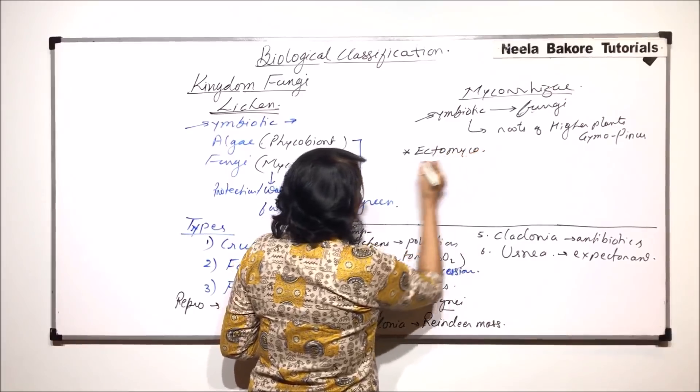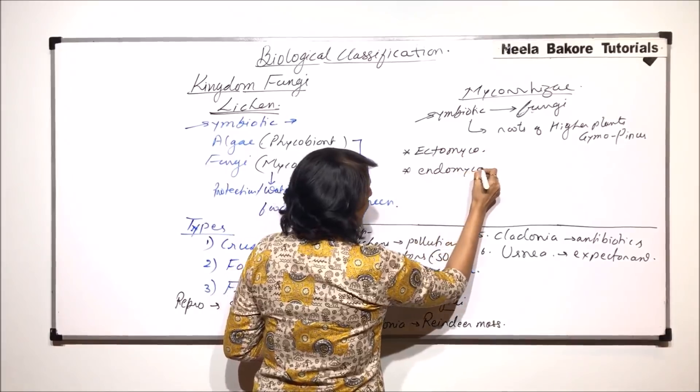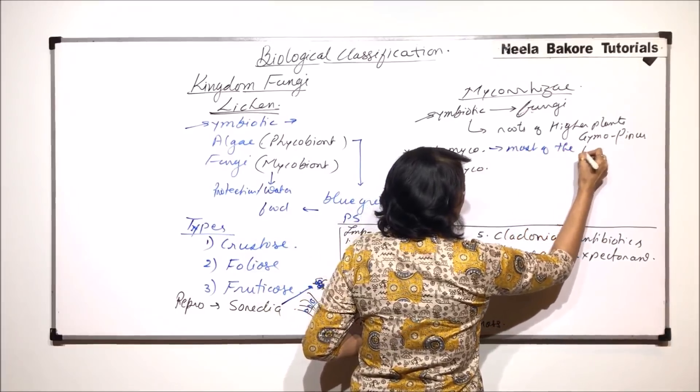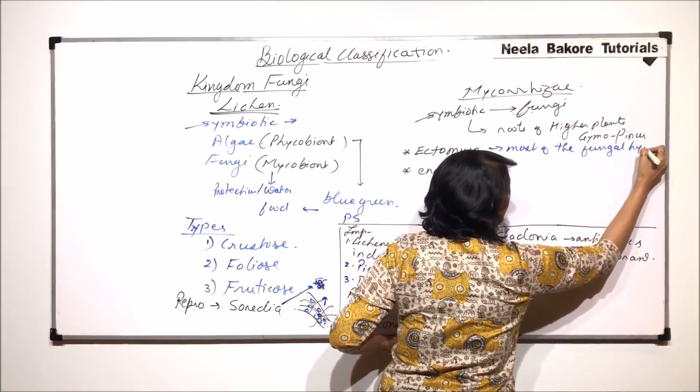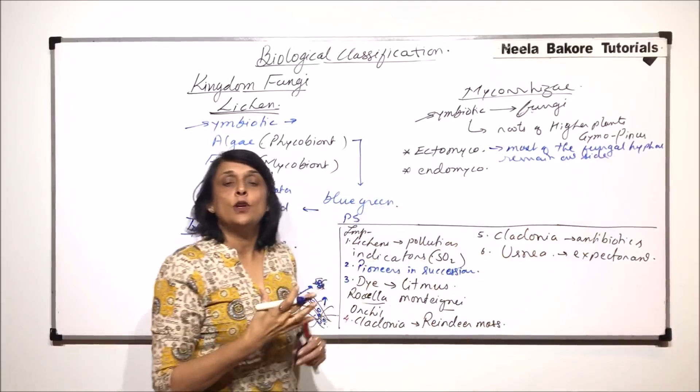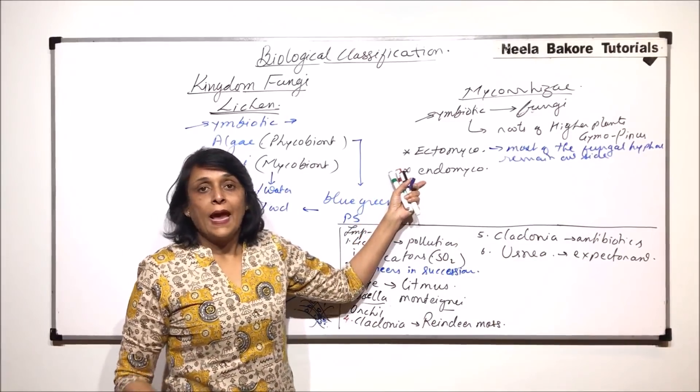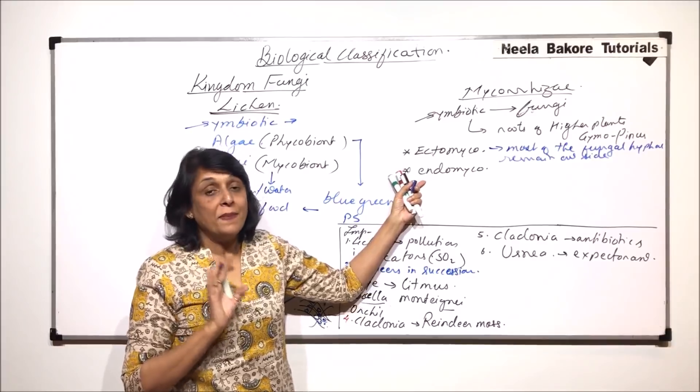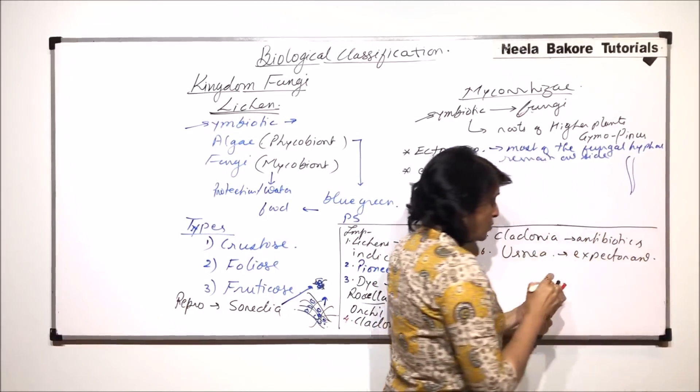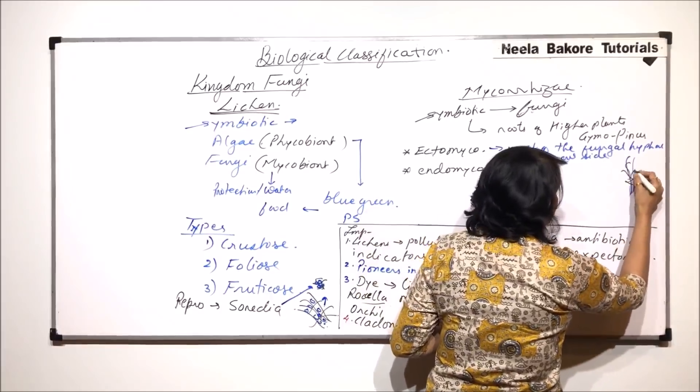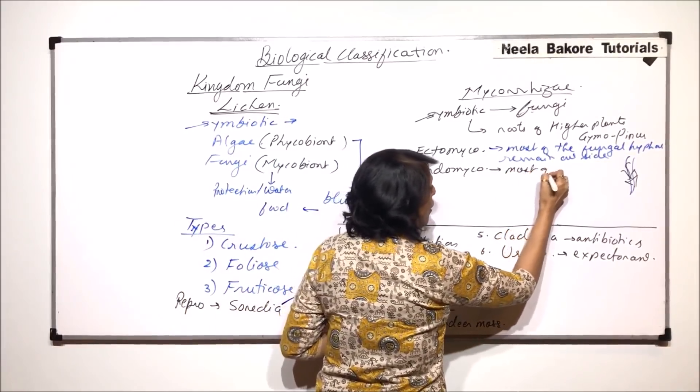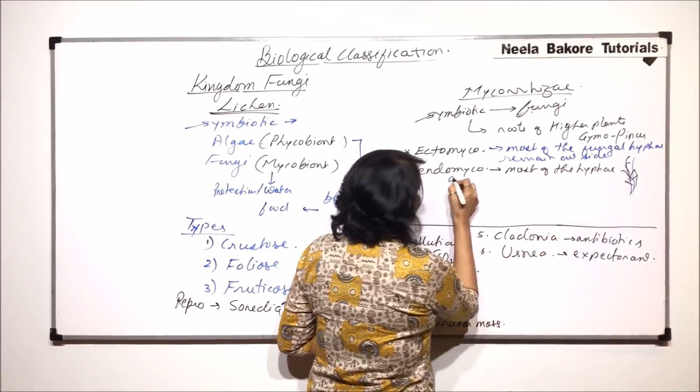Ectomycorrhizae and endomycorrhizae. As the name tells us, ectomycorrhizae means most of the fungi or fungal hyphae remain outside. We would see a network of threads outside the roots, and very few hyphae are going to penetrate. They are not parasitic; both are going to get benefited out of each other. In endomycorrhizae, most of the hyphae are inside the root.